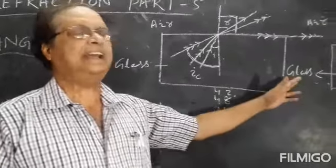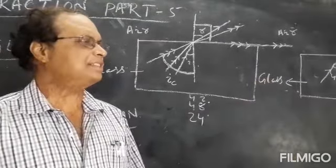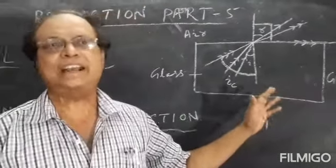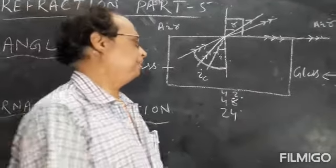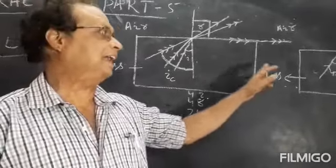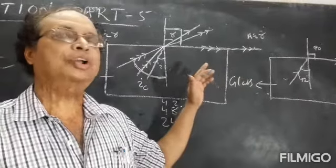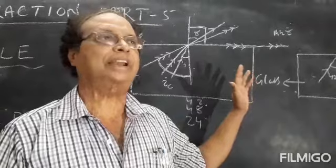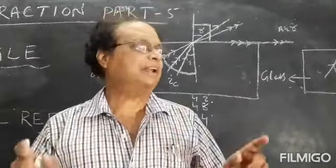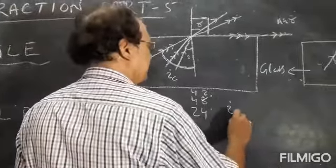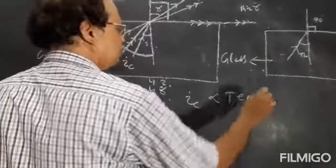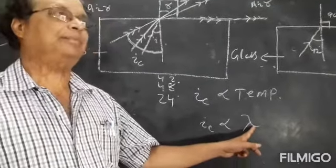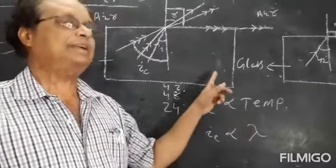The other factors on which critical angle depends are temperature and wavelength of light. Critical angle is directly proportional to the temperature of the medium. It is also directly proportional to the wavelength of light used (lambda). For red light, wavelength is more so critical angle is more; for violet light, wavelength is less so critical angle is less.